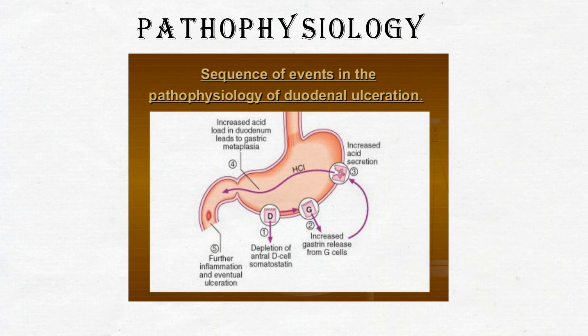Due to any of the causes, the depression of antral D-cells takes place, which increases the gastrin secretion from the G-cells, which increases the acid secretion, which leads to the metaplasia of the acid and inflammation of the gastric mucosa.